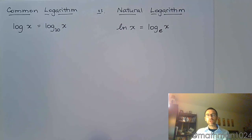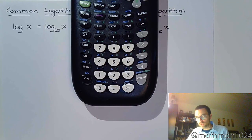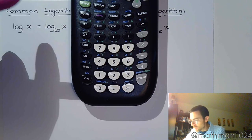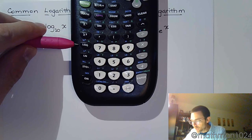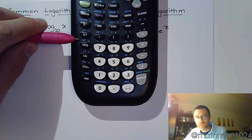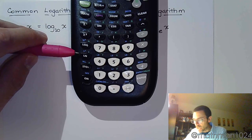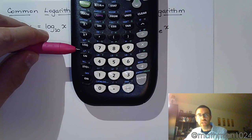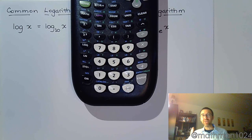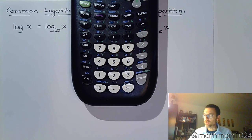Natural log means log base e. And if you ever forget which one is which, look on your calculator. You'll notice that you've got your log and your natural log buttons right here. The log button, just above that as a secondary feature, is 10 to the x. So you know that those guys are connected - log is base 10. And above natural log is e. So natural log is log base e. If you ever forget, just look on your calculator.